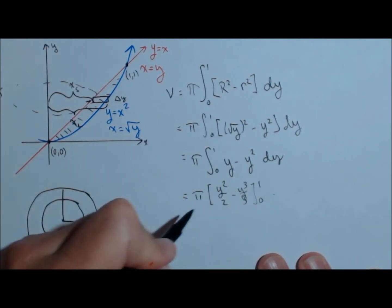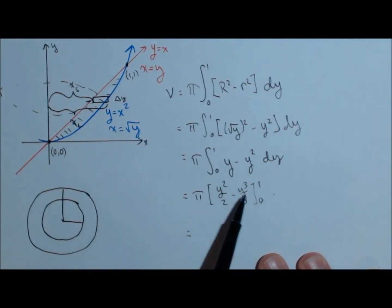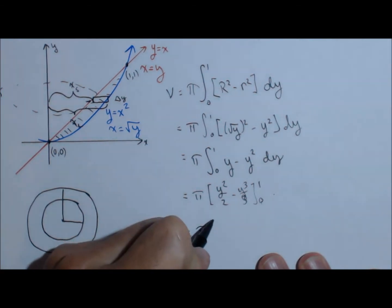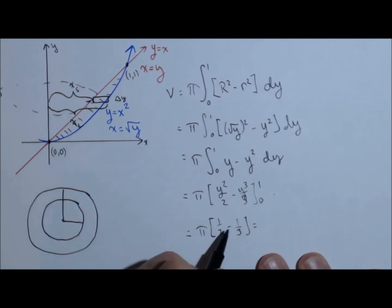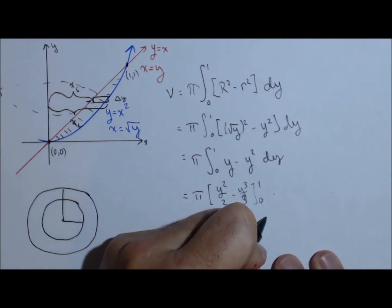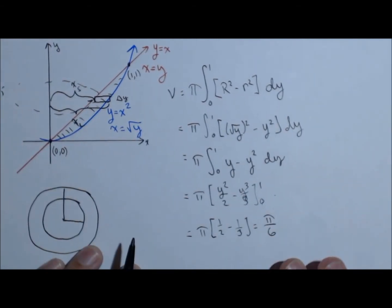And since we're going from zero to one, we don't really need to worry about the zero, because zero plugged in for these is zero. So pi times one-half minus one-third, which is three-sixths minus two-sixths times pi, or a volume of pi over six. So again, we can do that very quickly.